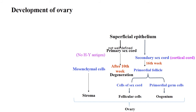Regarding ovary development, the same primary sex cords include epithelial cells of the sex cord and primordial germ cells. The cells of the sex cord form primordial follicles, and inside the primordial follicles are located primordial germ cells. From the cells of the sex cord develop follicular cells, from primordial germ cells develop oogonia, and mesenchymal cells give rise to the stroma of the ovary.